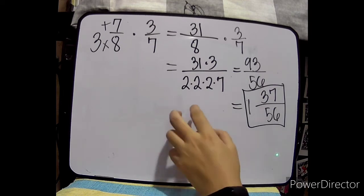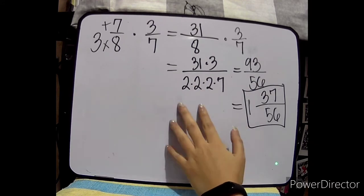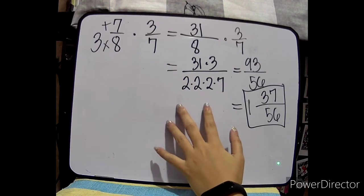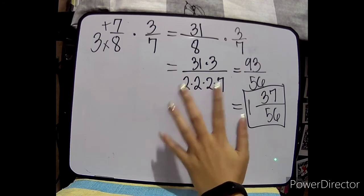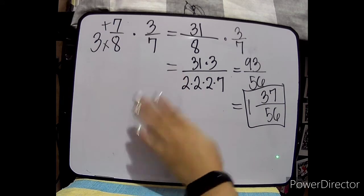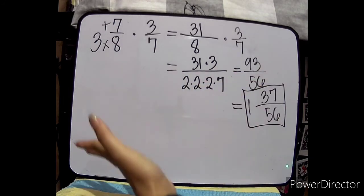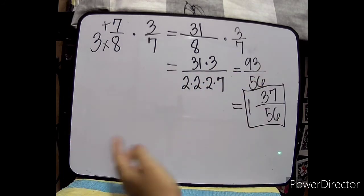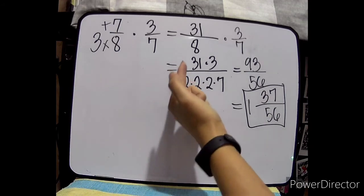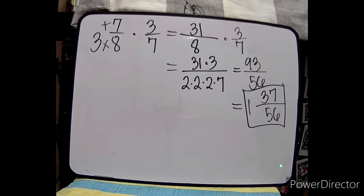Sometimes what happens is a student thinks their answer is already in lowest terms, but it isn't. So for me, the easiest way is to prime factor the numerator and denominator, cancel any common factors, and then multiply all remaining numbers on the numerator and all on the denominator.